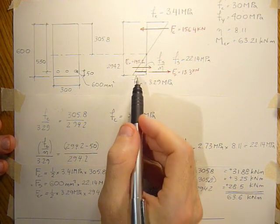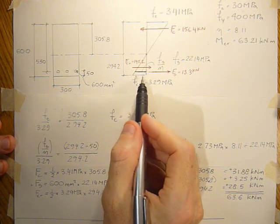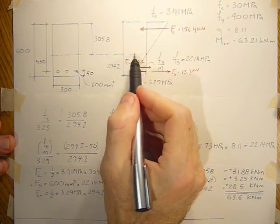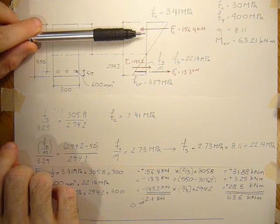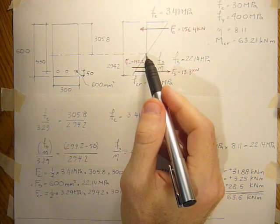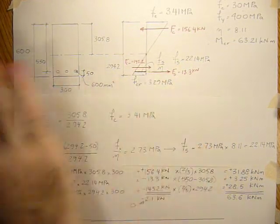And what we'll find is that once this happens the neutral axis will shift up and all the concrete below the axis will become completely ineffective.